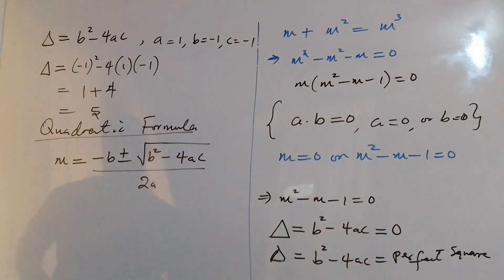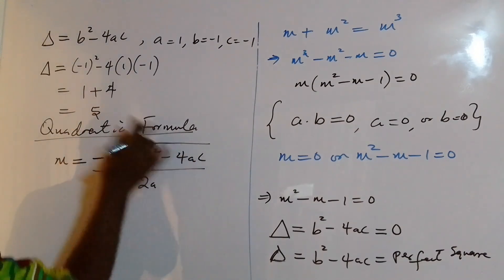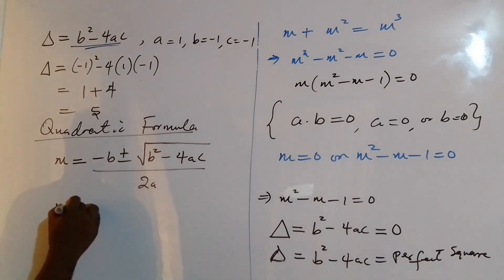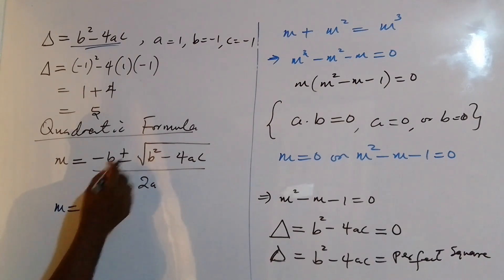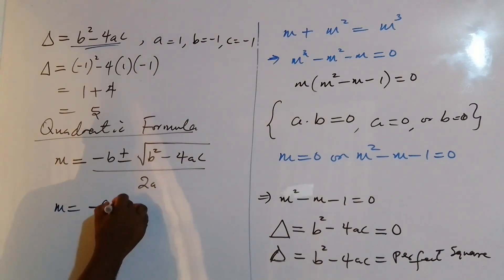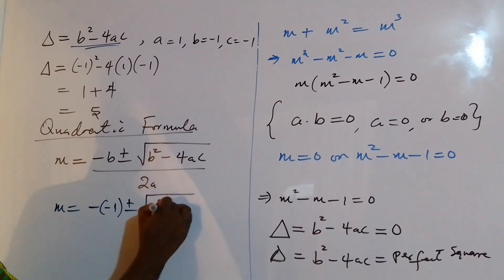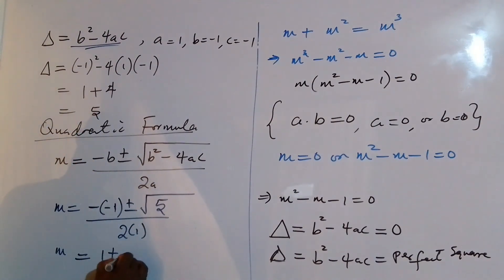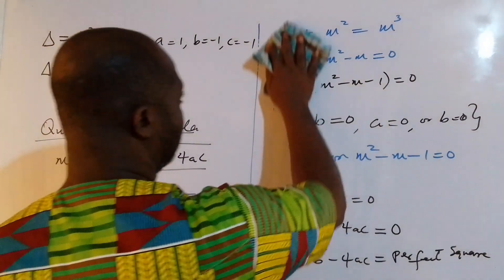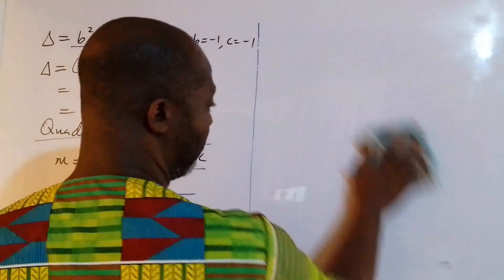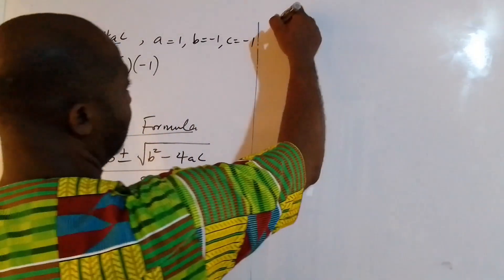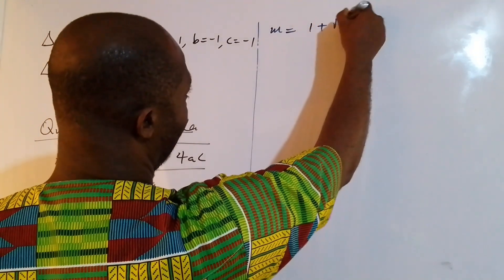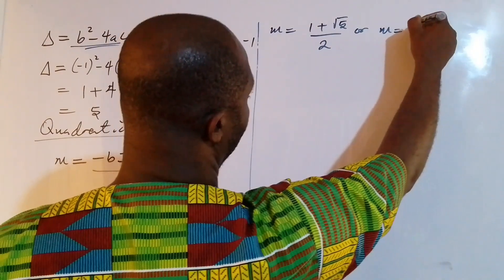We already know that the discriminant under the square root is 5. Therefore m equals negative of negative 1, plus or minus square root of 5, all over 2 times 1. This gives us m equals 1 plus or minus square root of 5, all over 2. So we get two solutions from the quadratic: m equals 1 plus root 5 over 2, or m equals 1 minus root 5 over 2.